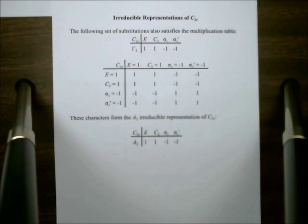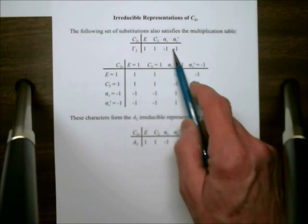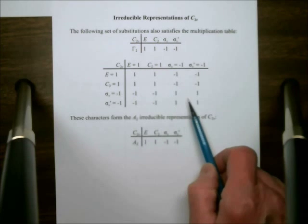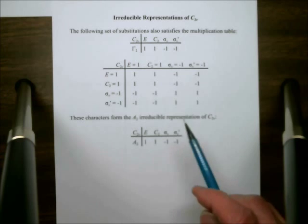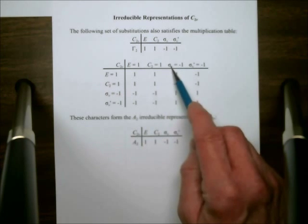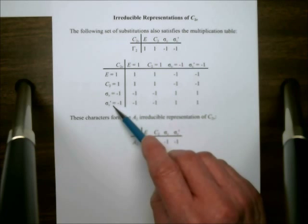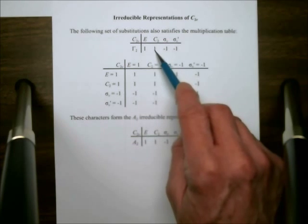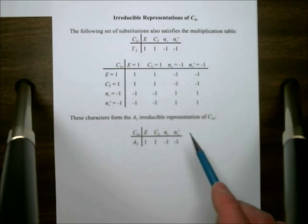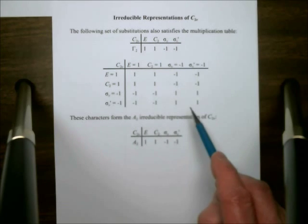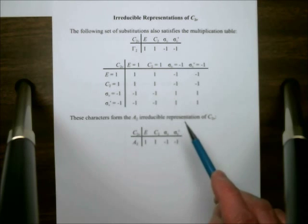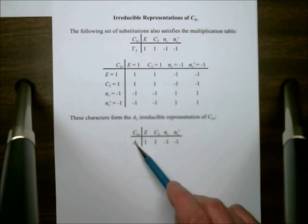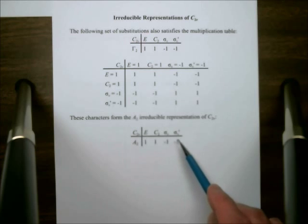Now I could make the substitution 1, 1, minus 1, minus 1 somewhat less trivial. If we look at this, it does indeed give us the results that we expect from the multiplication table. For example, if you take sigma v and multiply by sigma v prime in either order, you expect to get C2. I have a 1 here. I substituted 1 for C2, so that is the result. You could verify that this indeed does conform to the multiplication table of C2v. So we now have another irreducible representation, and this one's called A2.